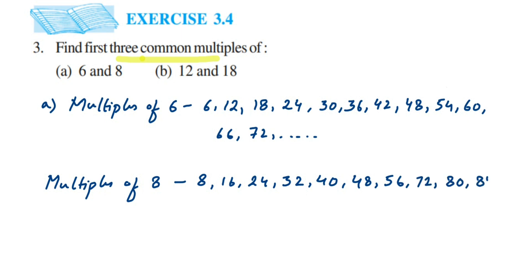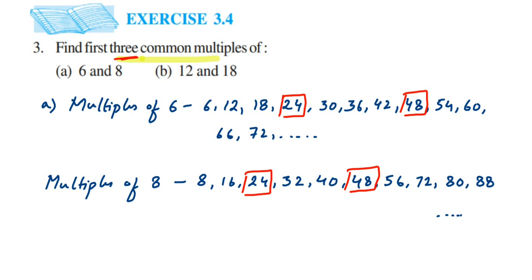Now we are going to find the common multiples — they are asking us to find 3 common multiples, meaning the ones present in both lists. Here you can see 24 is present in both. The next one is 48, which is also present in both. Then we have 72. In case you stopped at 60 and are not getting common multiples, you can continue — 6 elevens are 66, 6 twelves are 72 — just keep going.